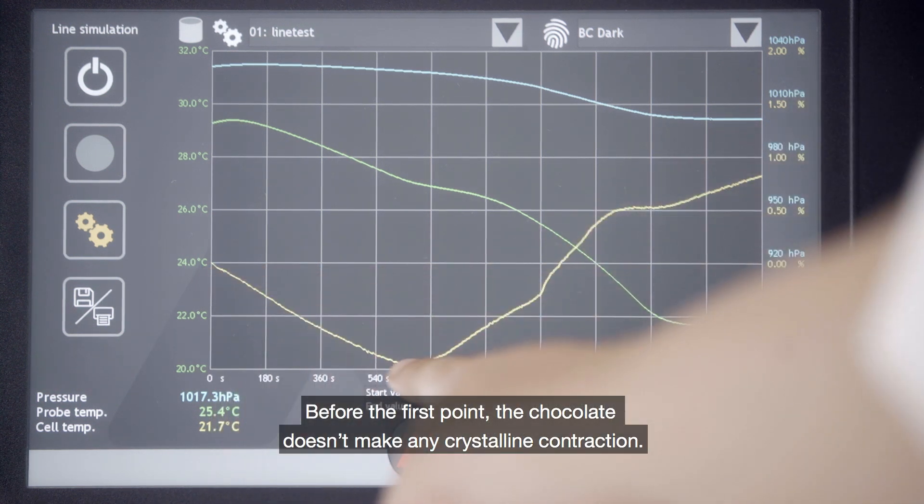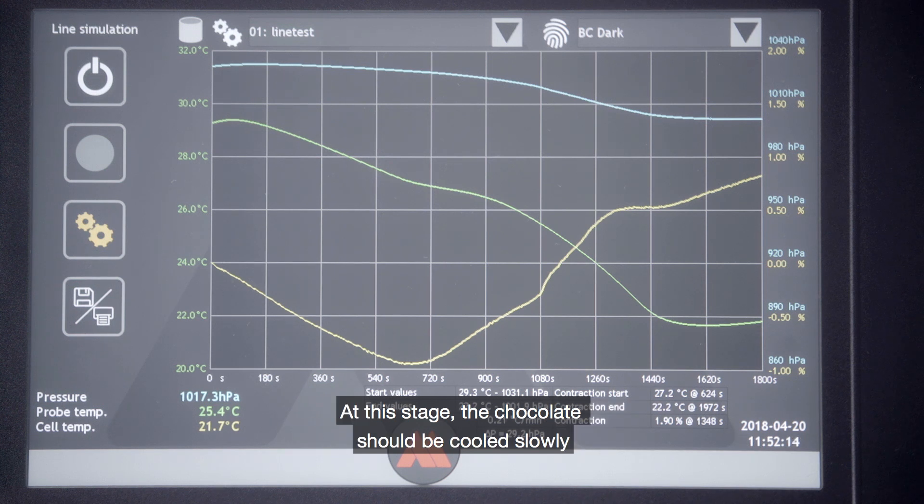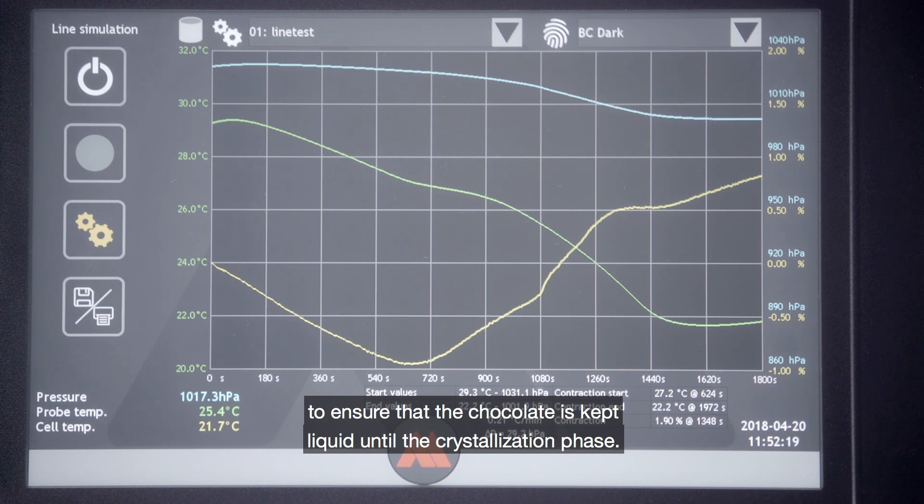Before the first point, the chocolate doesn't make any crystalline contraction. At this stage, the chocolate should be cooled slowly to ensure that the chocolate is kept liquid until the crystallization phase.